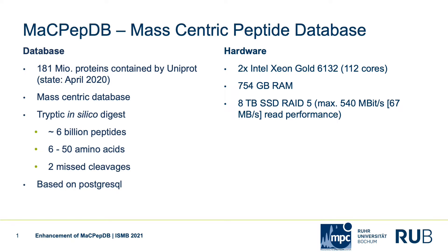Currently MacPeptiDB runs on a single server offering 112 cores, 754 gigabytes of RAM, and 8 terabyte RAID 5 SSD storage with a maximum read performance of 67 megabytes per second.